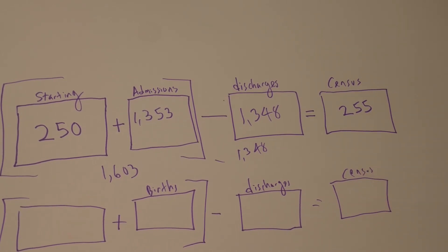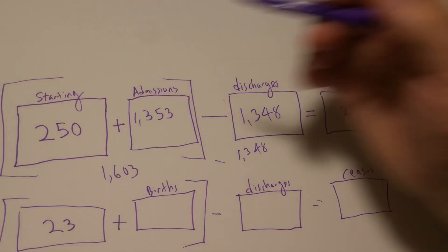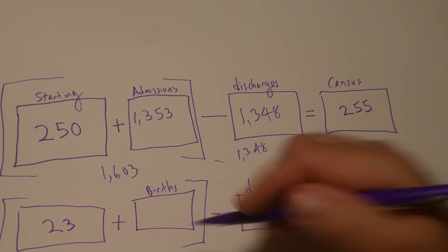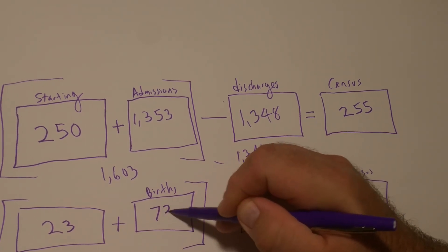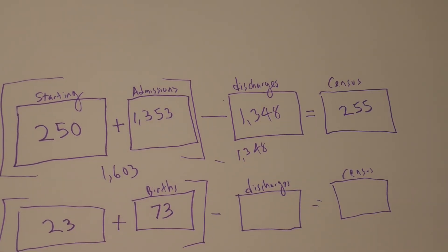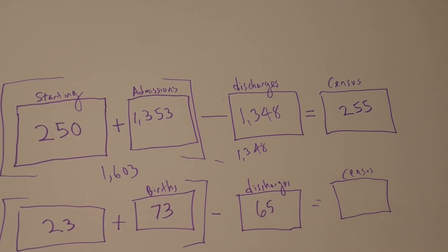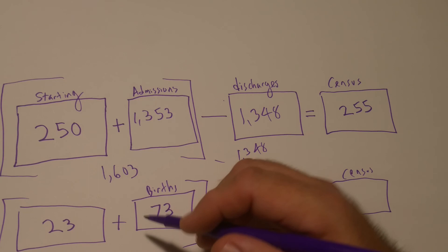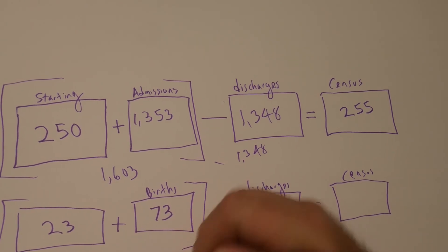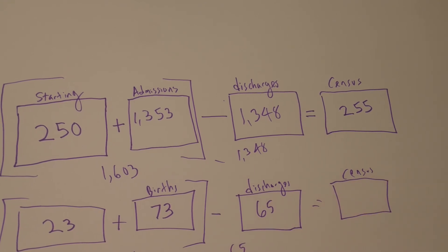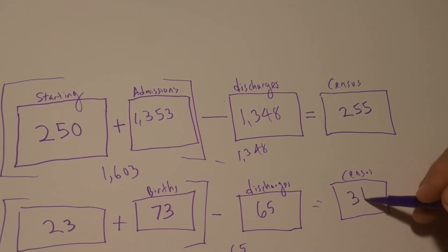So, from our data, we started with 23. There was 73 births. And there were 65 discharges. So, I take the 23 and 73. That gives me 96. Add them together. And I'm going to subtract out the 65. And that's going to leave me a census of 31.